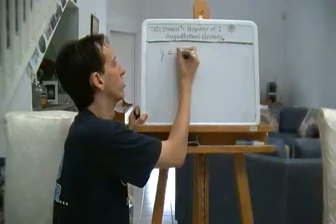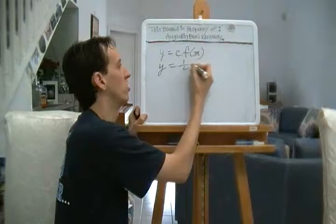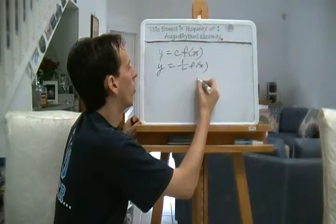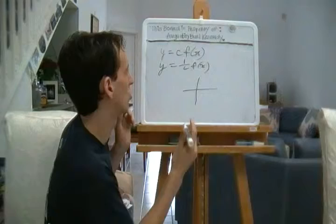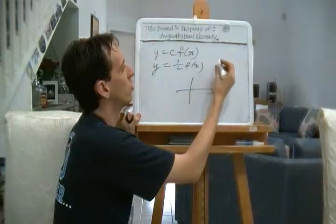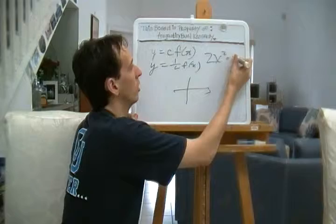Point is, if we have something like this: Y equals C, F of X, and we're going to also have Y equals 1 over C, F of X, or anything like that, we're going to be looking at a stretch or a compression. A compression is just a negative stretch, but it's all going to be vertically.